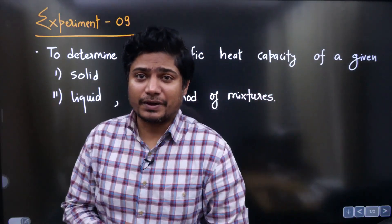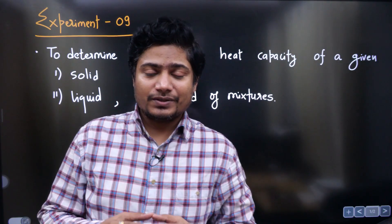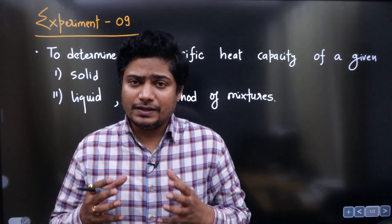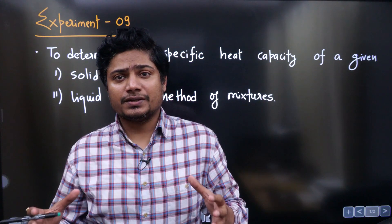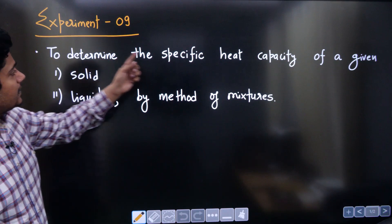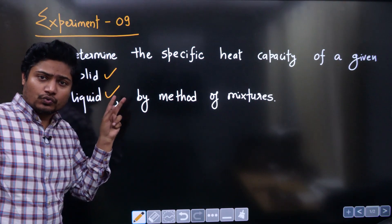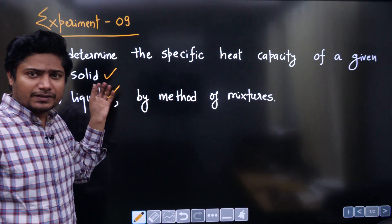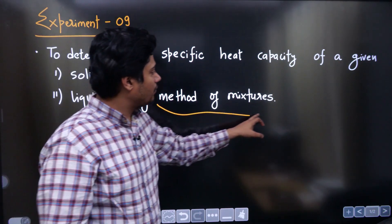Let us discuss experiment number 9. This is the last experiment of class 11th. In this particular experiment, we have to determine the specific heat capacity of a solid and a liquid. The method used here is given the name the method of mixtures — to determine the specific heat capacity of a given solid and a liquid.